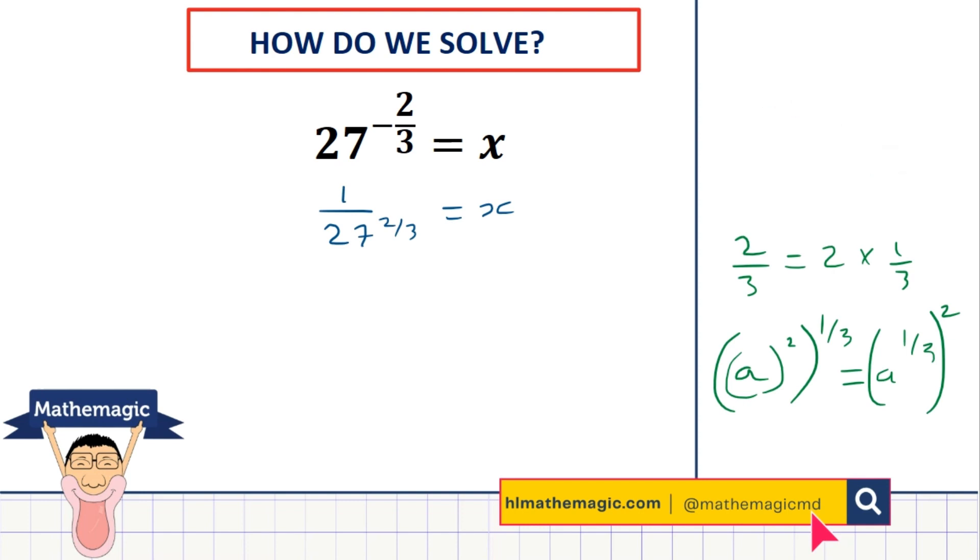Let's think about what to the power 1 third means for a second. Well, if I was to say a to the power 1 third, that means the cube root of a, which means which number times itself times itself gives me a. And a squared, that just means a times a.